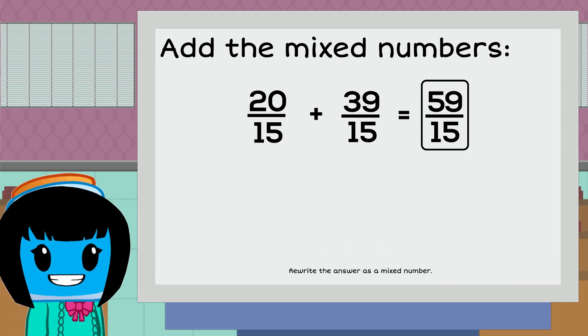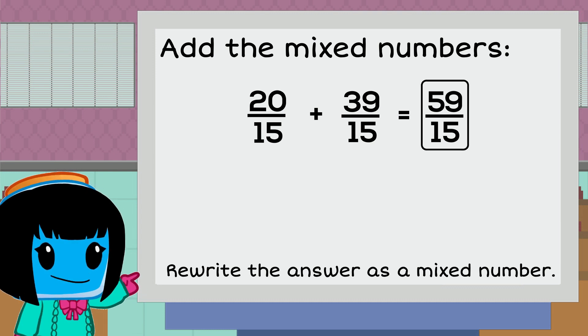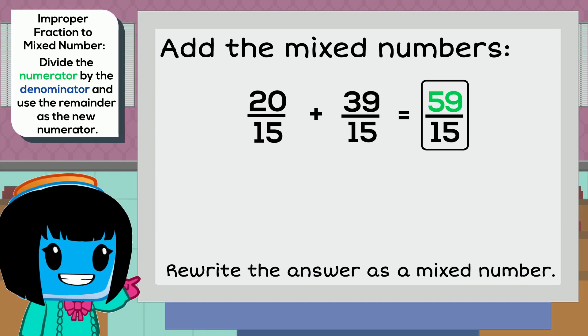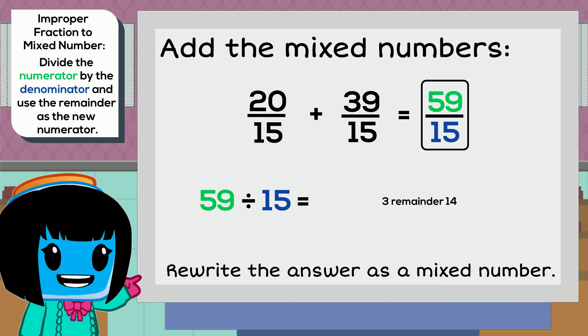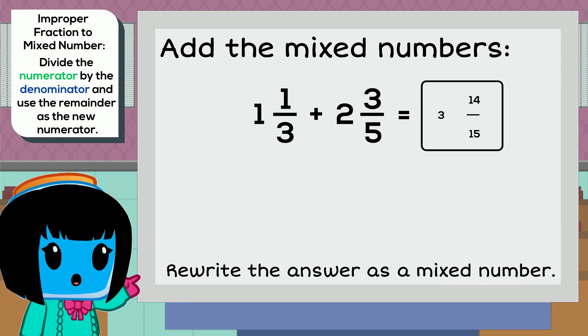One more step. Let's rewrite our improper fraction as a mixed number. To do that, we need to divide the numerator by the denominator and use the remainder as our numerator. So 59 divided by 15 equals 3 with a remainder of 14, making our mixed number 3 and 14 fifteenths.